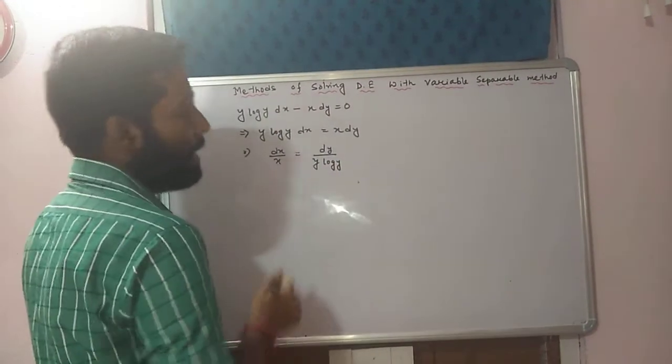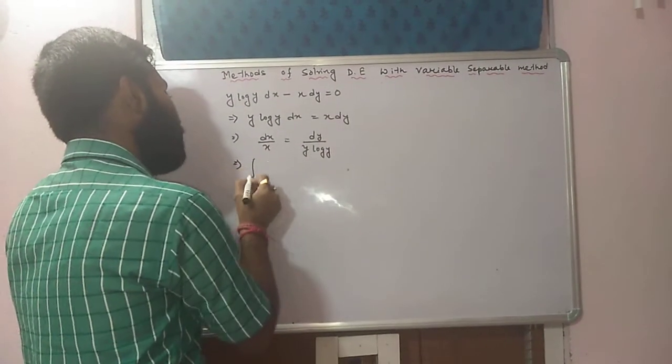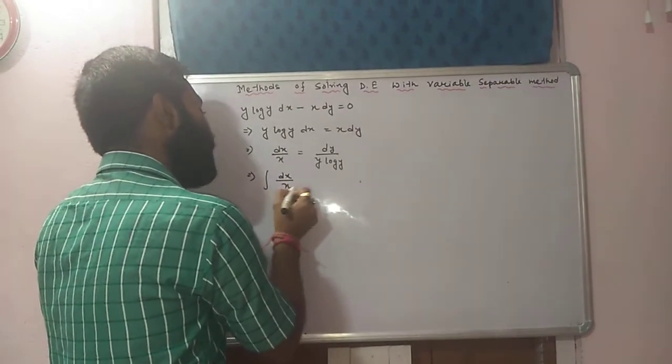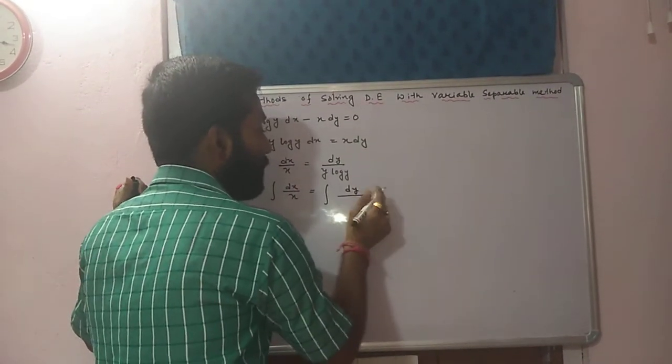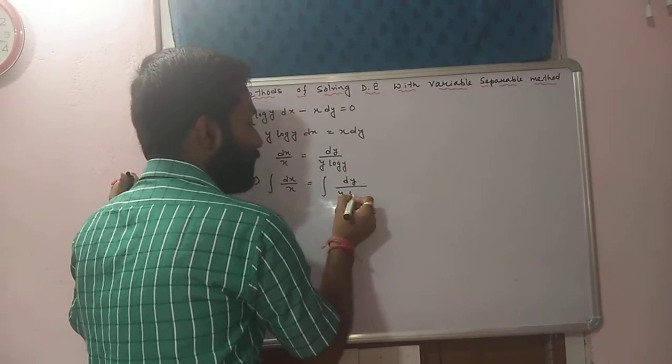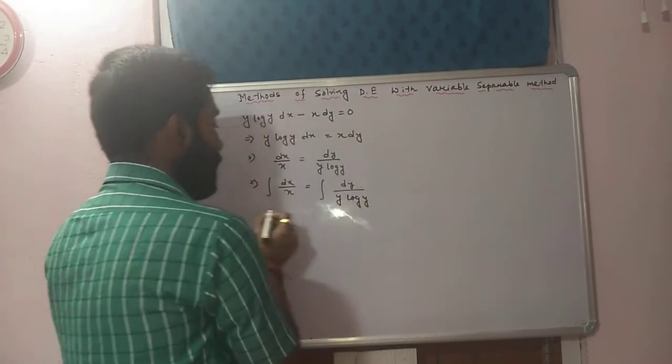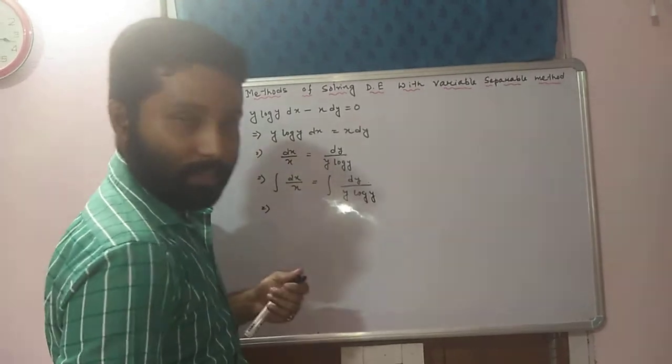चलो हो गया, separate हो गया. Now you have to integrate on both sides. That is integration dx by x equals integration dy by y into log y. Now after taking integration on both sides,